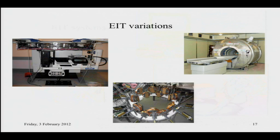EIT has not stood still and we have curious variations. One is a breast imaging system where the subject lies prone with the breast hanging down and hydraulic electrodes are pushed in — done under a large Dartmouth grant. We've also found groups combining EIT with coils rather than electrodes. Coils have less sensitivity but the advantage that they don't need contact. However, the question remains whether the subject can move.